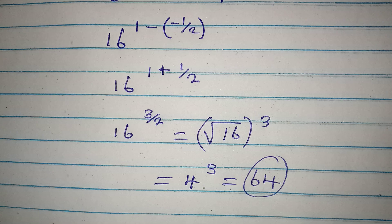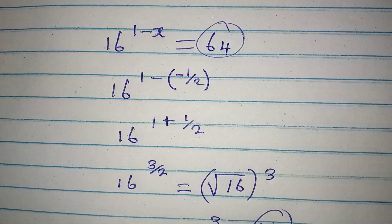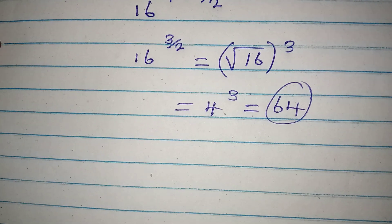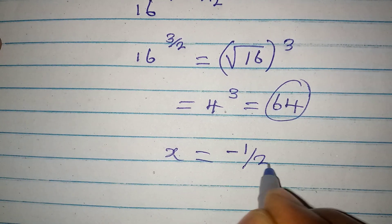And that is what we had on the right hand side. So we are very correct to say that our x is equal to negative 1 over 2.